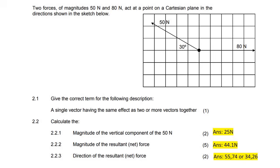Two forces of magnitude 50 and 80 act on a body in the same plane in the directions shown. Let me draw this clearly: we've got a force going to the right of 80 newtons, and a force going up of 50 newtons, with this angle being 30 degrees.